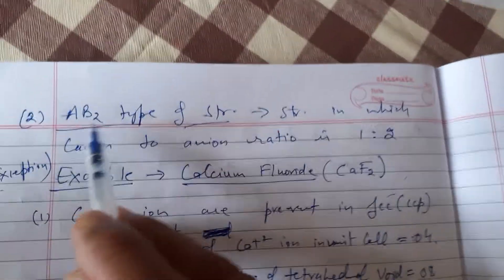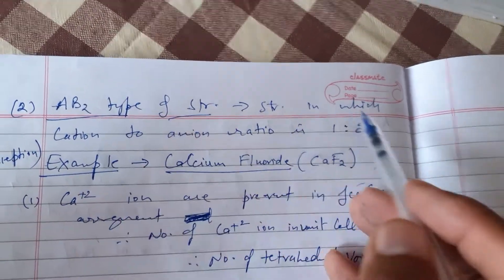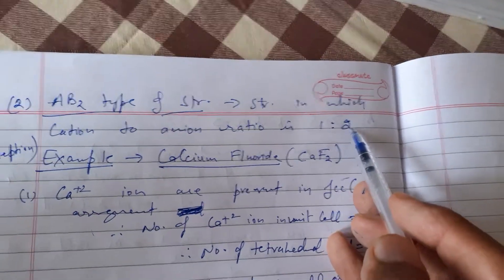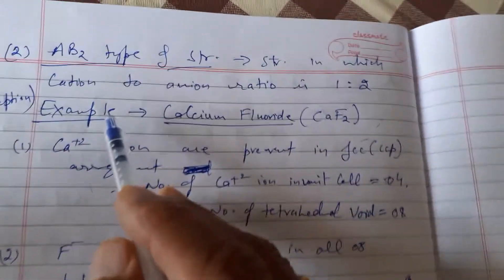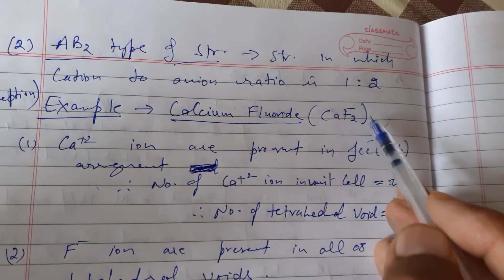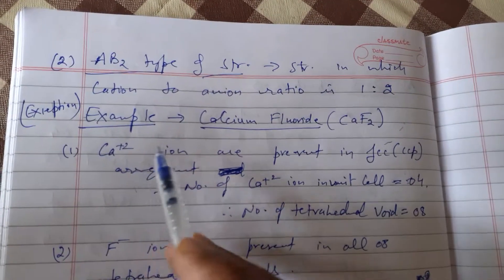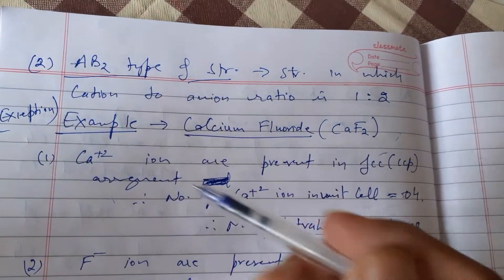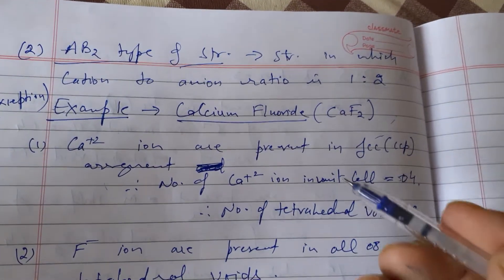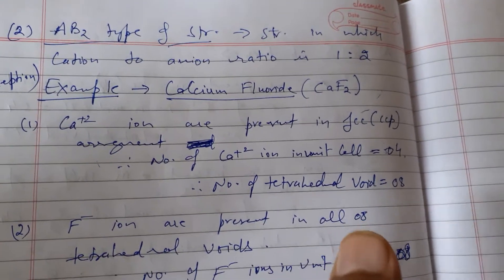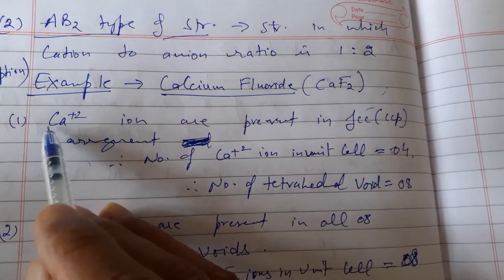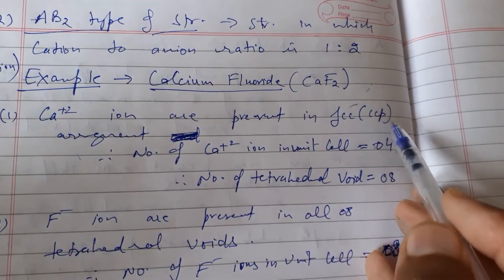The second type of structure of ionic compounds is A₂B, in which the cation to anion ratio is 1:2. We will deal with the example of calcium fluoride. This is an exceptional example — it is opposite to the normal case, where positive ions form the basic unit cell instead of negative ions. This special structure is called the fluorite structure. In this case, calcium ions are present in FCC arrangement.